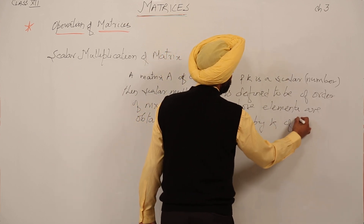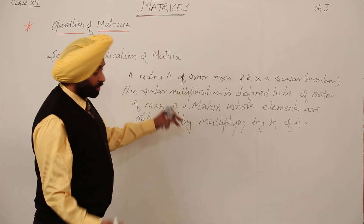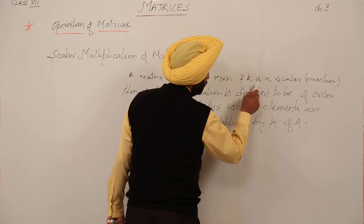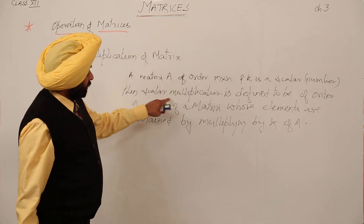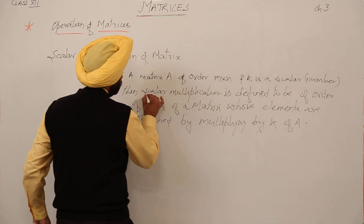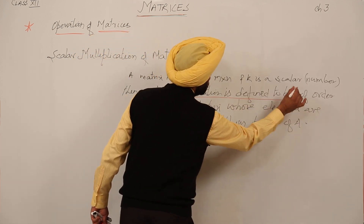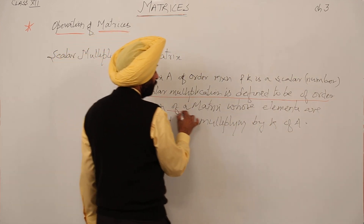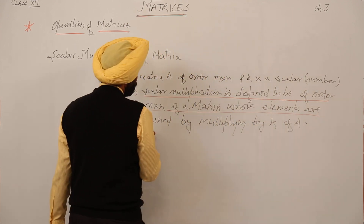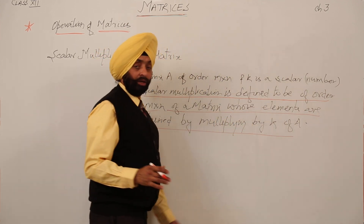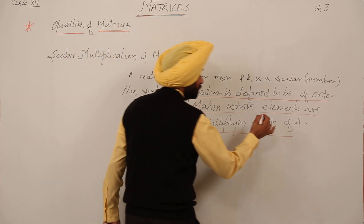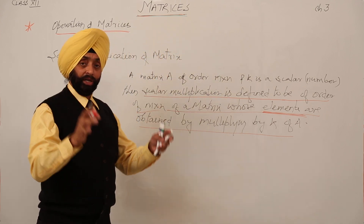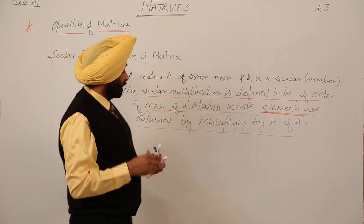The resulting matrix is one whose elements are obtained by multiplying each element by k. So matrix A is of order m×n, k is a scalar number, and scalar multiplication is defined to be a matrix of order m×n whose elements are obtained by multiplying every element of matrix A by k.